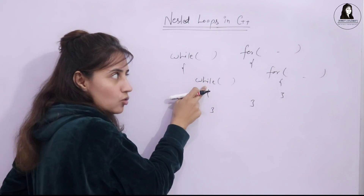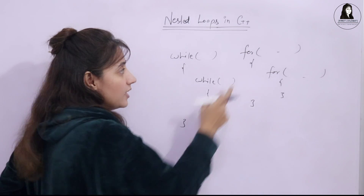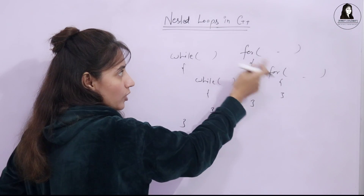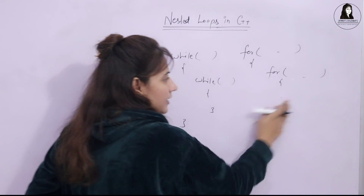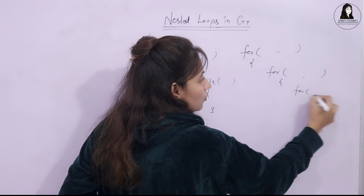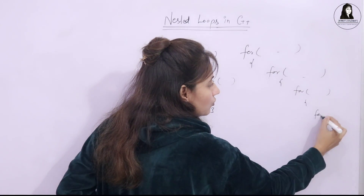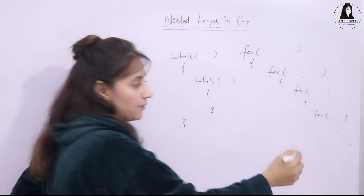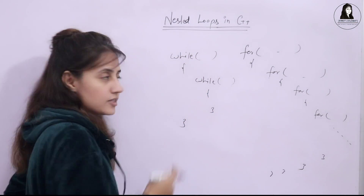The inner one is known as the inner loop and the outer one is known as the outer loop. It's not limited to just two levels. Nesting can be possible up to many levels — within one for loop we can have another for loop, and within that, yet another for loop.